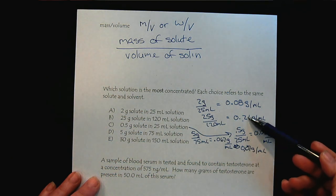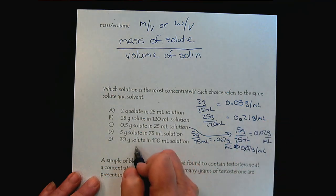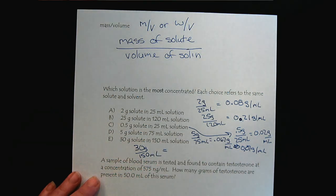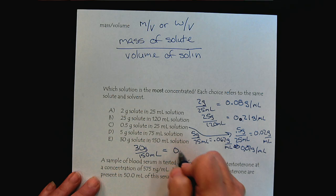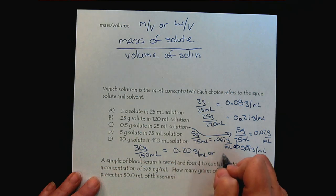This last one is 30 grams in 150 milliliters. We take 30 divided by 150 and we get 0.20 grams per milliliter, and for sig figs we would drop it to there.